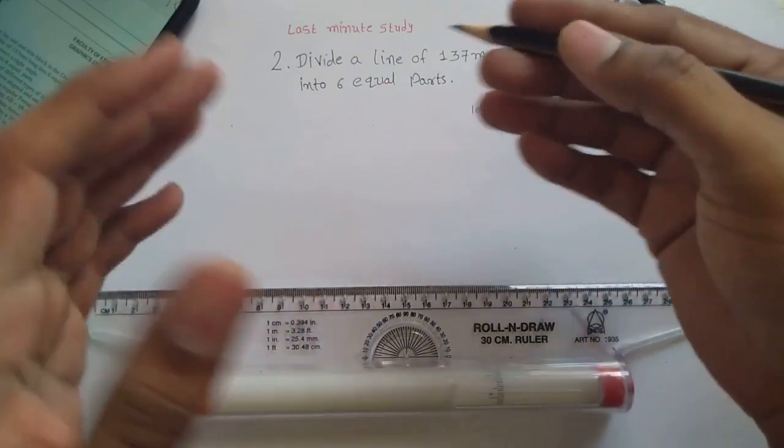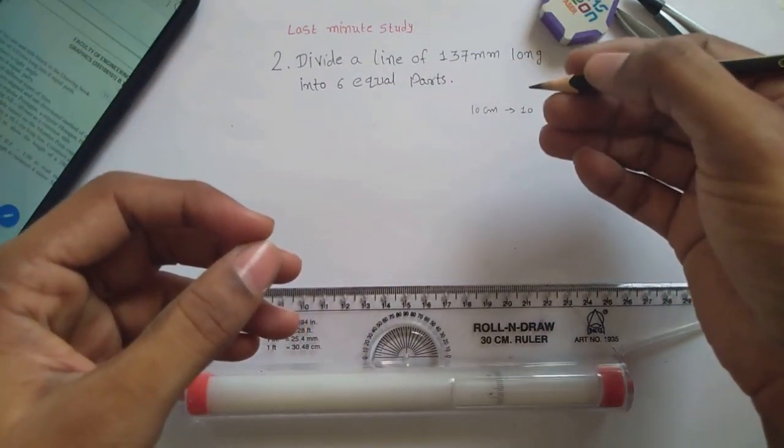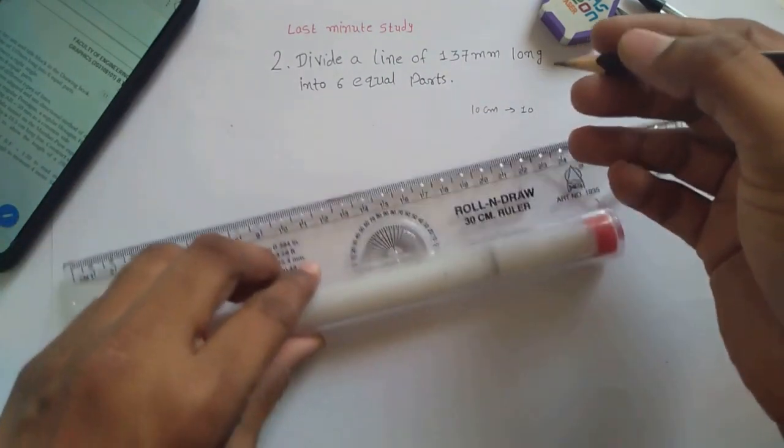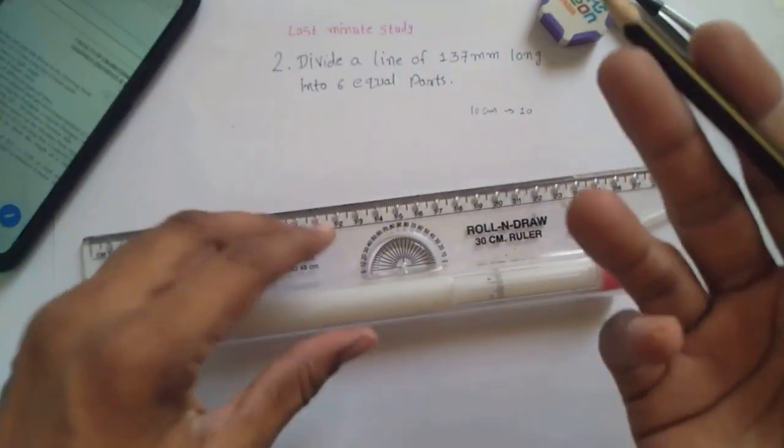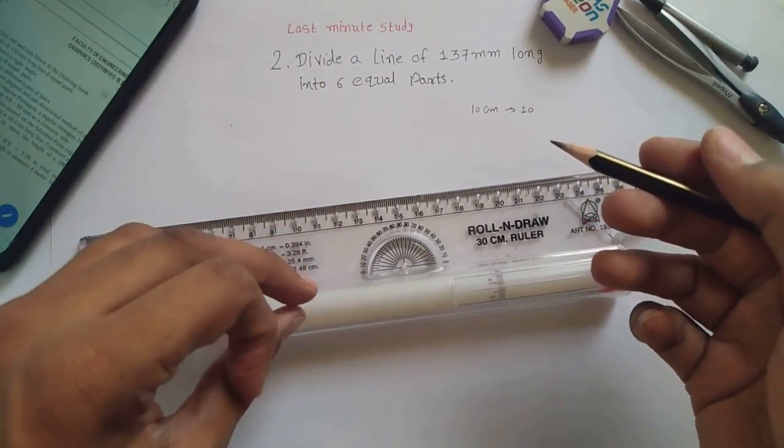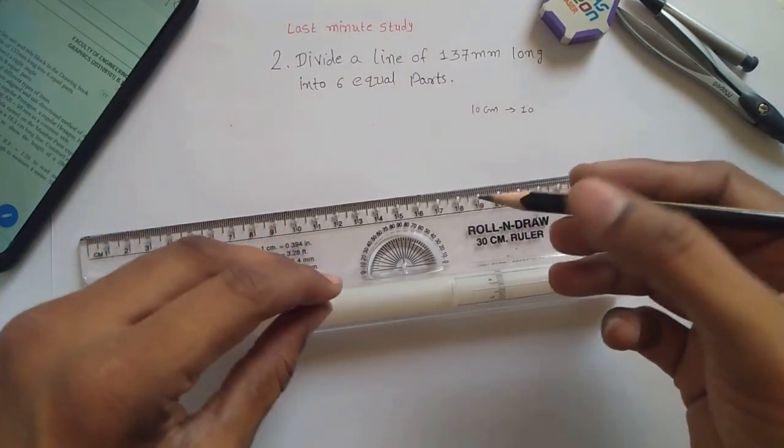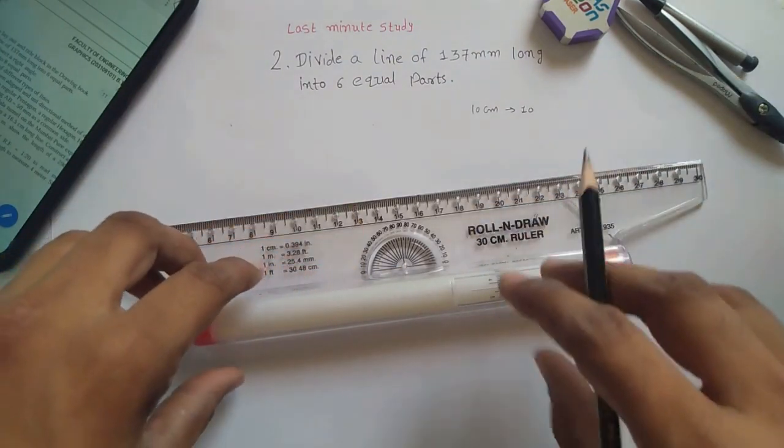For that reason we have to go for the graphical method. To divide any length of line into equal parts we have to follow this rule, we have to follow this method.